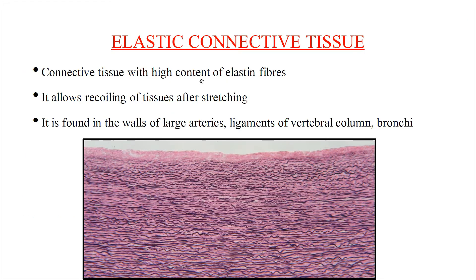Elastic connective tissue contains a high amount of elastin fibers, allowing the tissue to recoil after stretching. It is found in the walls of arteries, ligaments of the vertebral column, and bronchi. This allows us to stretch and bend our bodies, and enables artery walls to expand and contract as blood flows through them.